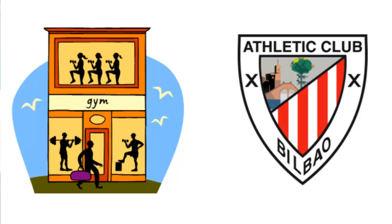El club atlético. Repite: el club atlético. A lot of English speakers want to say 'atlético' with a TH sound — but there's no TH sound in Spanish. El club atlético could refer to a sports club like a gym, or sports teams like soccer and football teams.